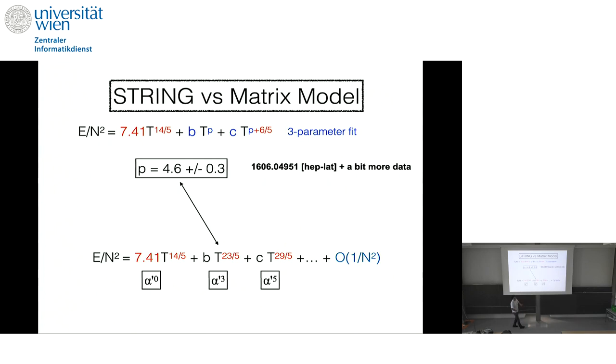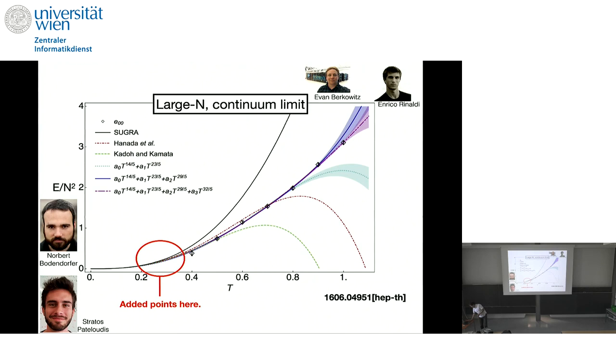And if we use this fit and that, then we could get p equals to 4.6. Which is consistent. This power. And of course, with more data, we can do even more precise test.